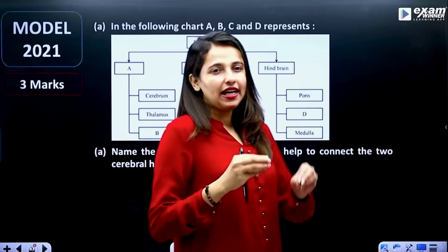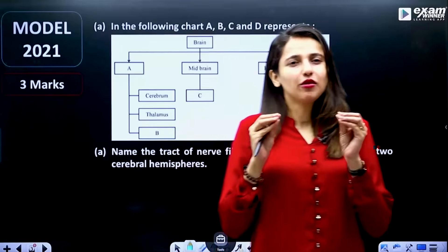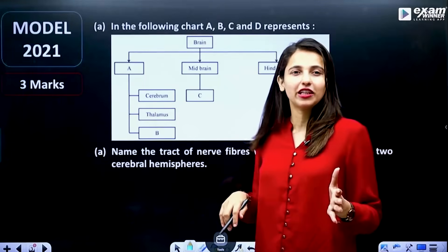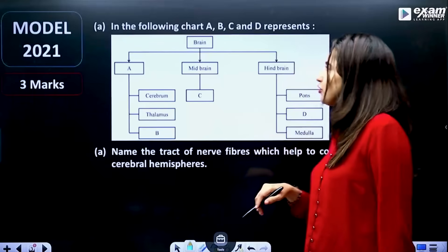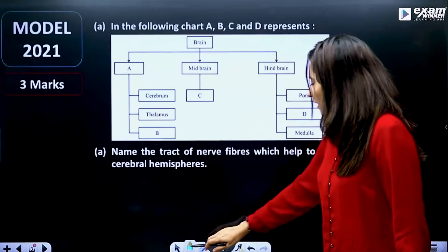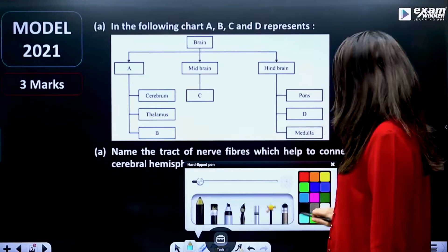This is a flow chart. Actually, this is a symbol flow chart. You can refer to this flow chart. The following chart has options A, B, C, D.